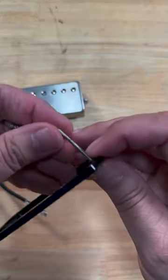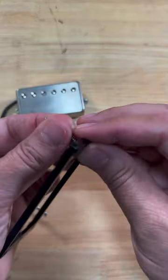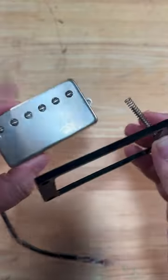Someone asked me if I have any tricks on how to easily install the screw and spring on a pickup when mounting it to a pickup ring.